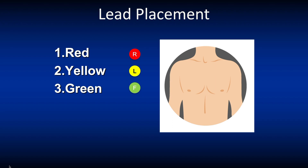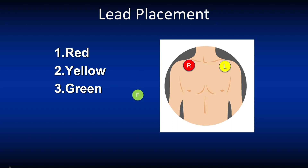Let's review the placement of the ECG electrodes. It should be noted that the color lead positioning are different in various parts of the world. In a lot of countries, usually based on the UK education system, you will see the following configuration: red to right, yellow to left, and green to the chest.